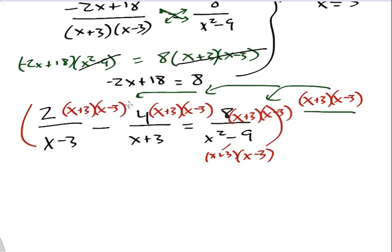What cancels here? X minus 3's. What's left? 2x plus 6. What cancels here? The x plus 3's. What's left? A minus 4 times x. And a minus 4 times minus 3 or plus 12. What's left on the other side? 8.